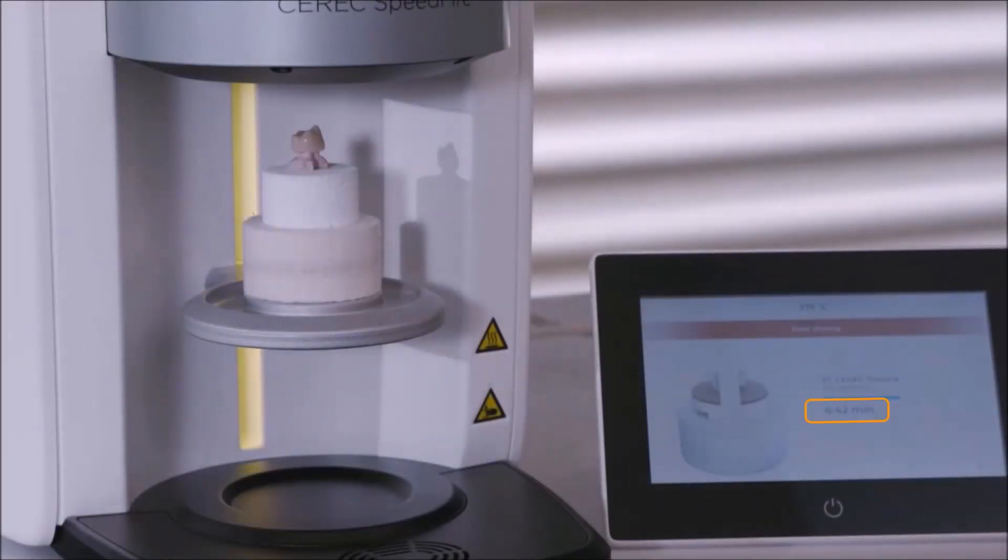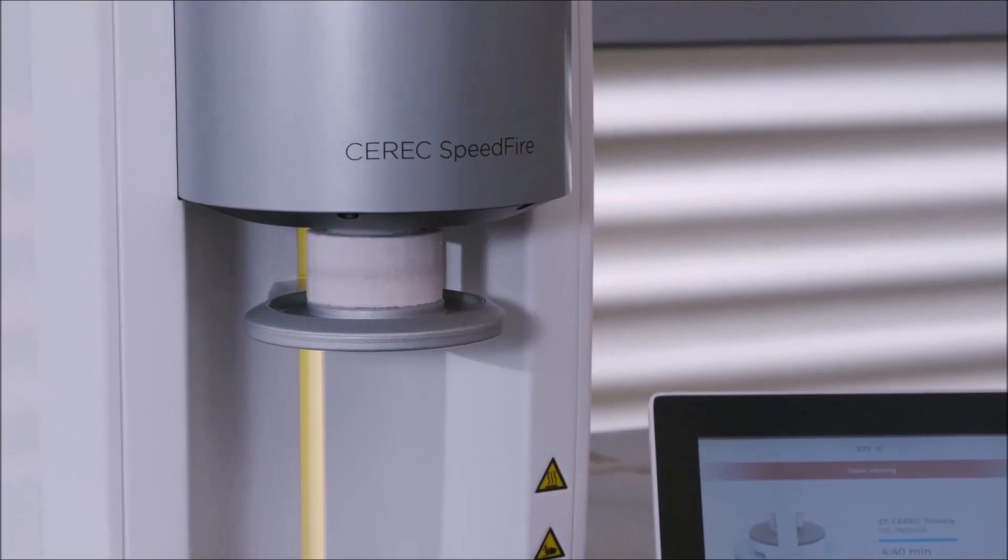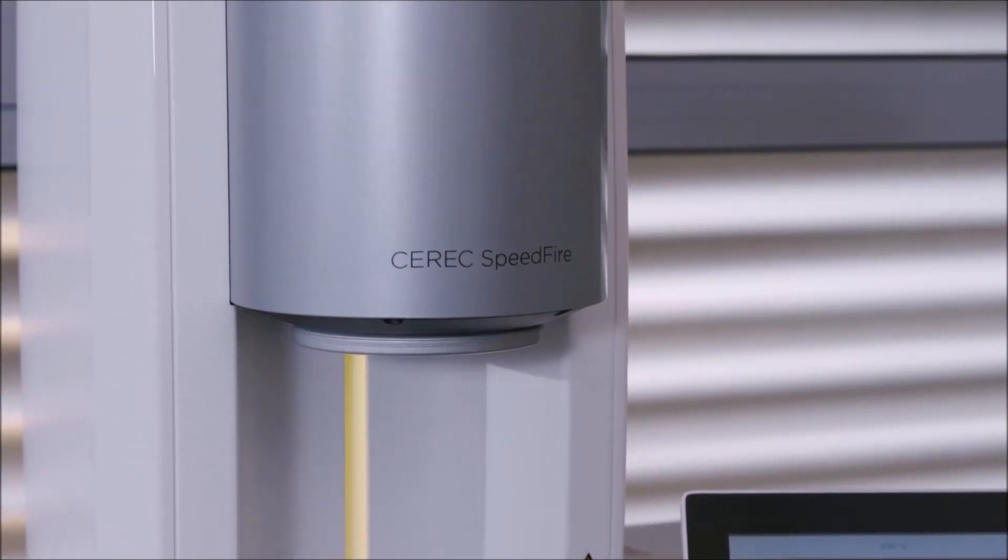The time is reduced from 10 minutes and 45 seconds to approximately 4 minutes and 30 seconds, showcasing the time-saving benefit of the CEREC Speedfire preheating function when glazing CEREC to CEREC.